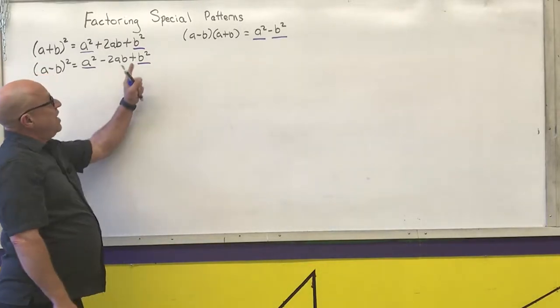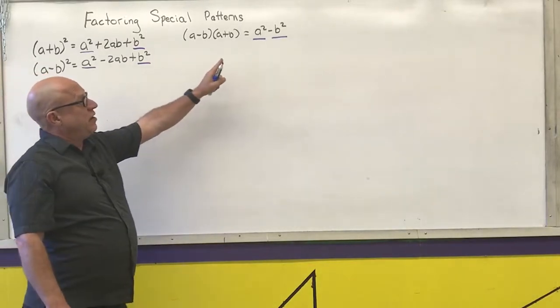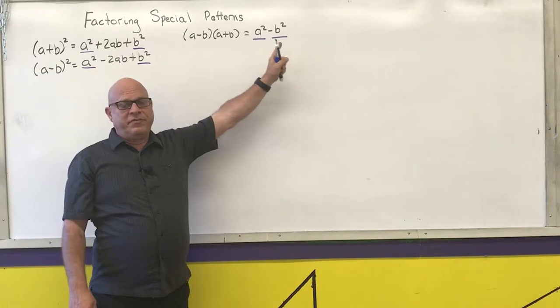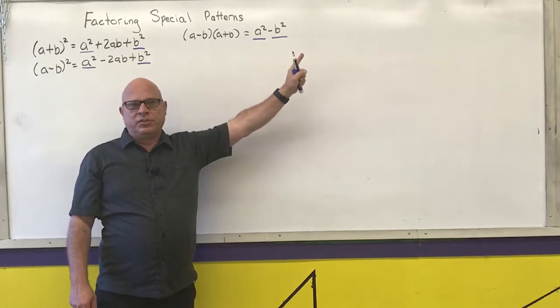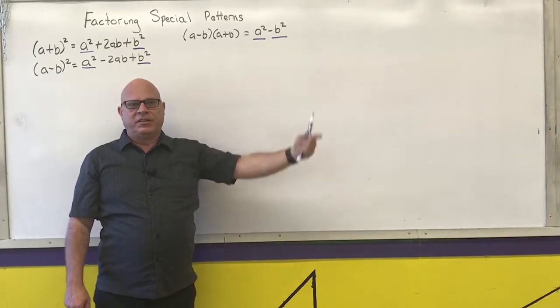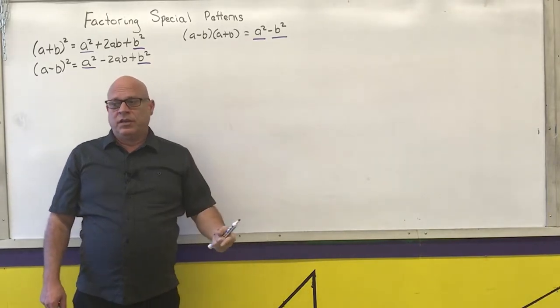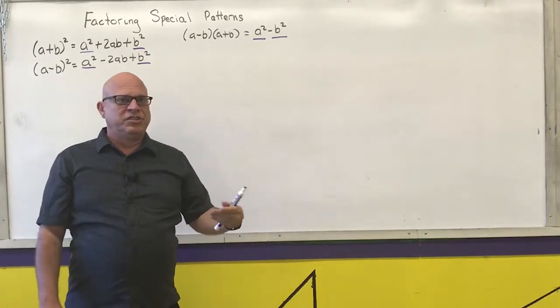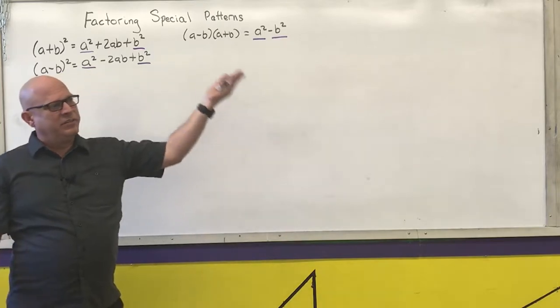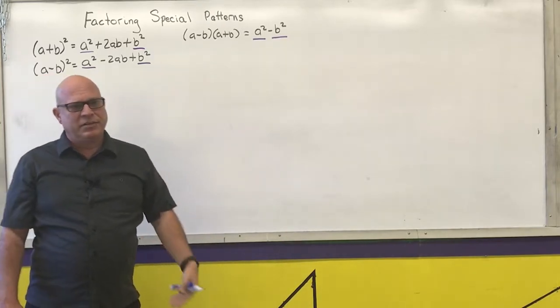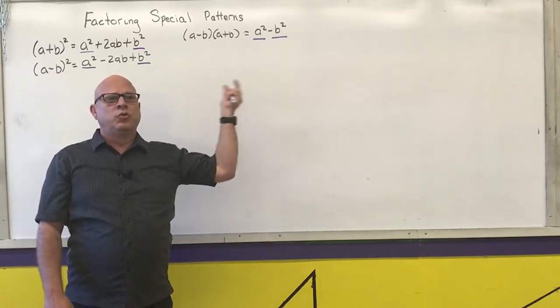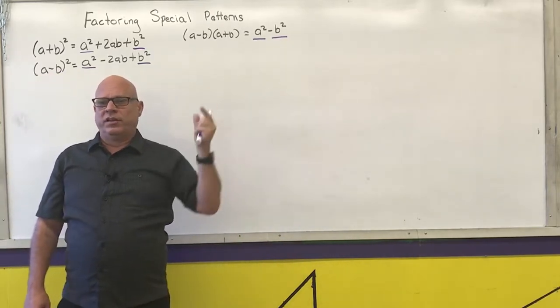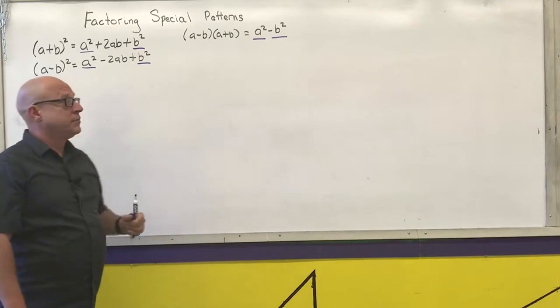You may have to factor out a greatest common factor first to get the perfect squares, but you want to see — if you factor out a greatest common factor and then end up with perfect squares, try to put it into one of the patterns.